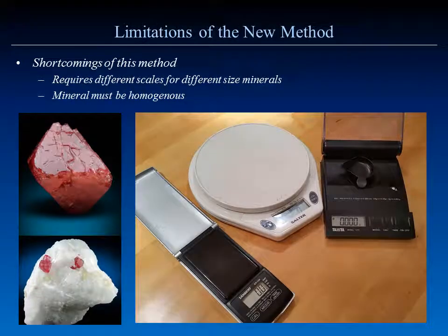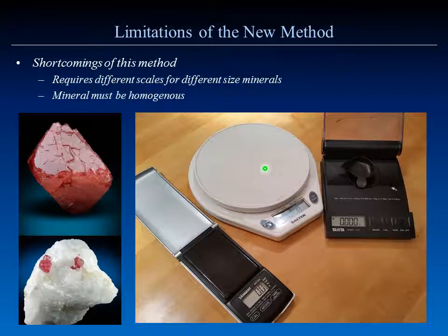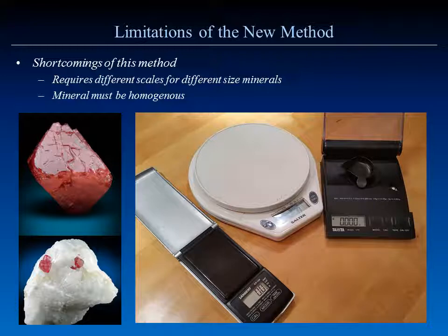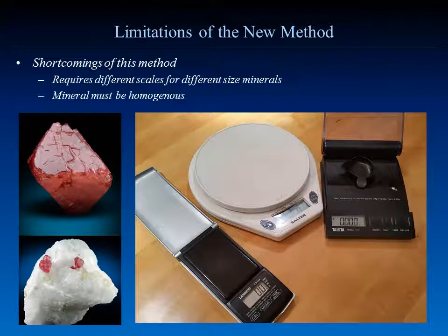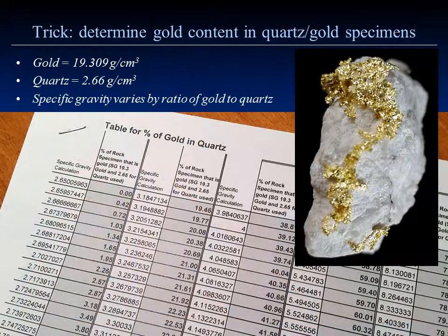Shortcomings of this method: use scales commensurate with the weight of the specimen. I have a kitchen scale with a five-pound capacity, a 300-gram capacity scale, and a delicate carat scale for small gemstones with about a 50-gram capacity. These two scales combined are about $50. Also, the mineral must be homogenous — a solid crystal without matrix. Crystals in matrix cannot be easily measured.